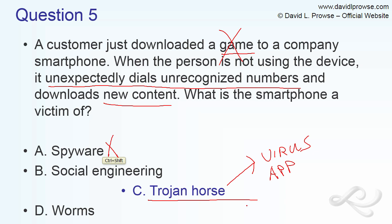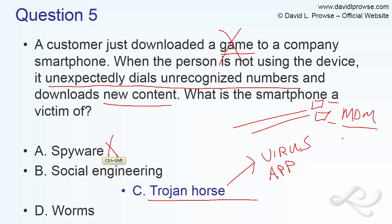Within the Trojan horse there's most likely some type of virus or additional application that unexpectedly dials numbers and downloads content — which could then bring in more viruses or ransomware. The whole idea is you shouldn't download games to a company smartphone. Only download authorized, verified apps. As an admin, use an MDM — mobile device management system — to distribute anti-malware updates to all devices from your admin workstation.